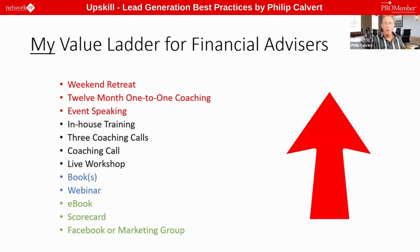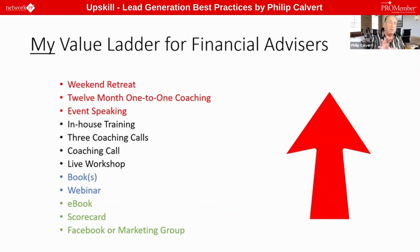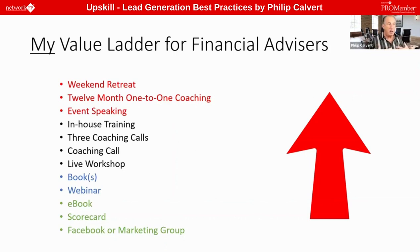So I offer things further down the ladder. I have a free Facebook group for financial advisors, a scorecard which I'll show you later, and a free ebook. The things in green at the bottom are free but high value. The things in blue I sometimes give away and sometimes charge for. The things in black I always charge for, and the things in red are my top-end, very expensive products.